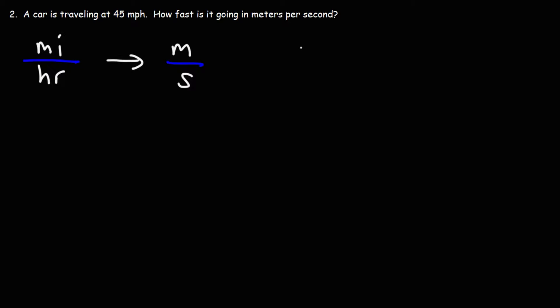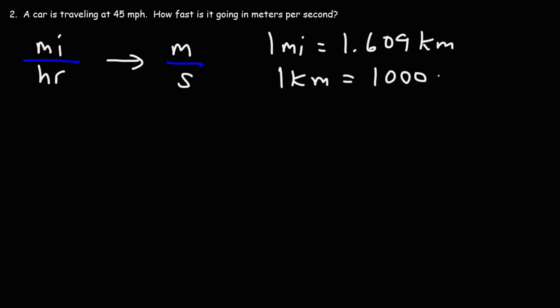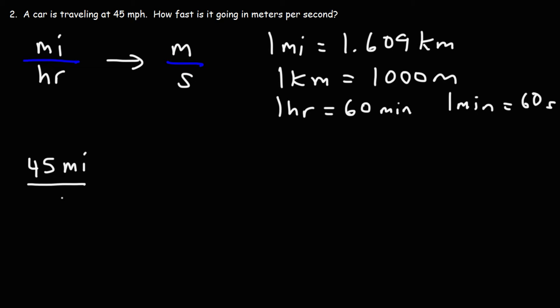It's helpful to write out the conversion factors you're going to use. One mile is equal to 1.609 kilometers. Since kilo means 1,000, one kilometer is 1,000 meters. We also know that one hour is equal to 60 minutes, and one minute is equal to 60 seconds. Those are the conversion factors we're going to use. So we have 45 miles per hour, and let's convert miles to kilometers.